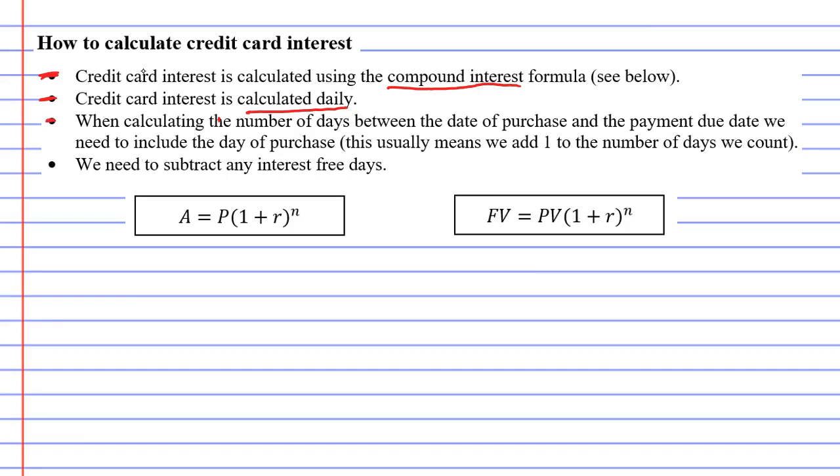The third dot point says when calculating the number of days between the date of purchase and the payment due date, we need to include the day of purchase. Now this might sound a bit confusing to some, so what I'll do is illustrate this.